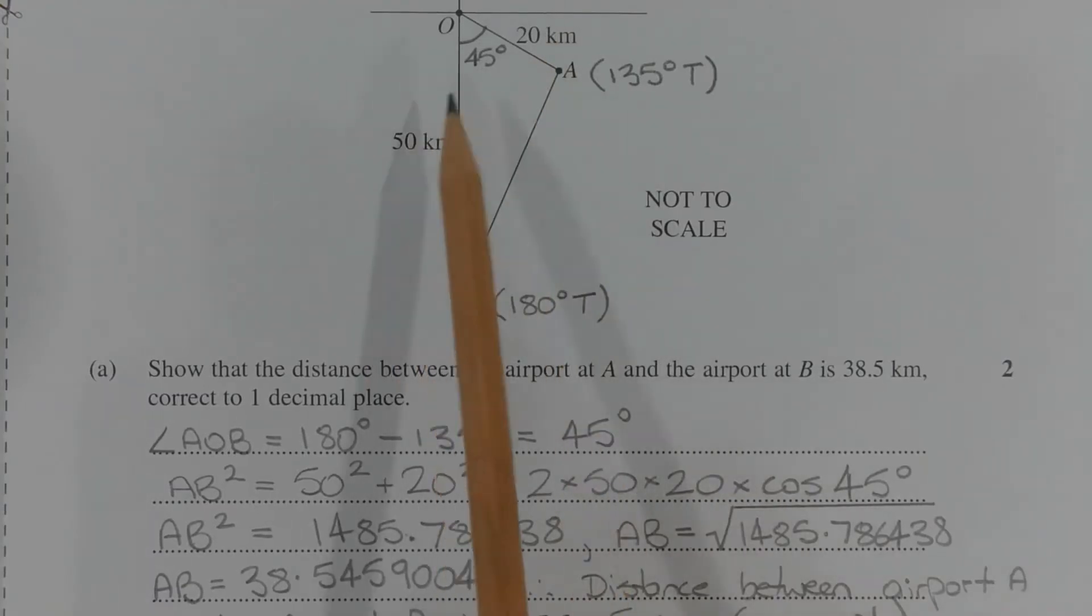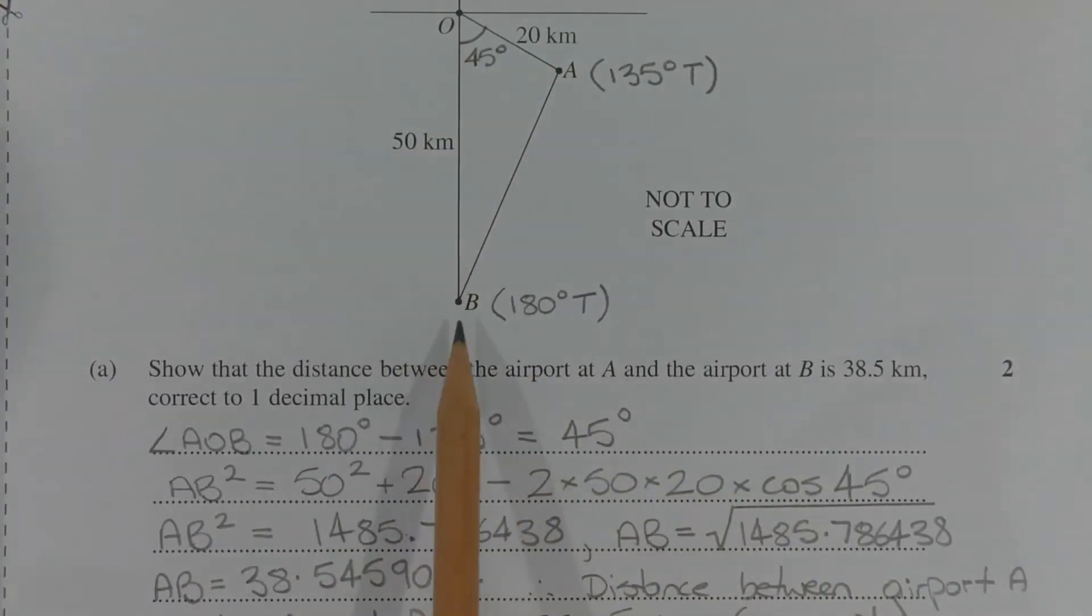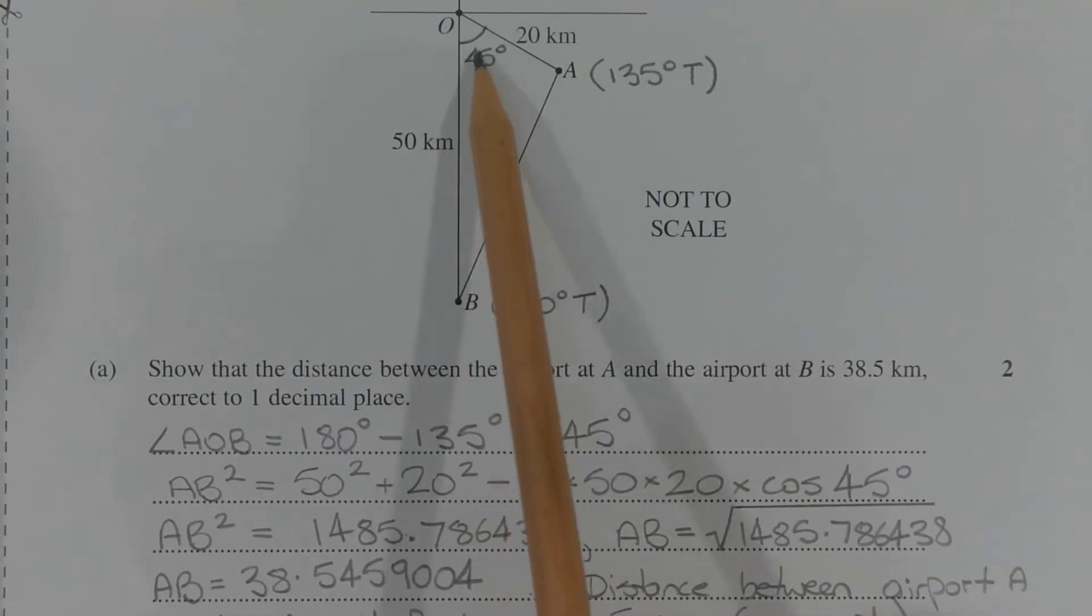Now we have two known sides: side OA, which is 20km, and side OB, which is 50km. If we can find this angle here, we can apply the cosine rule to find the length AB, which represents the distance between the two airports. So firstly, to find the included angle.